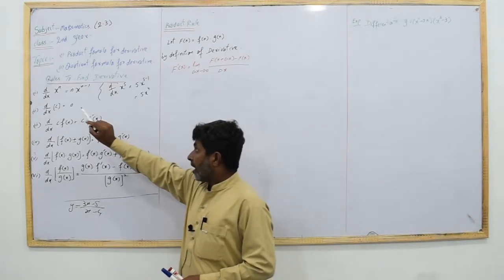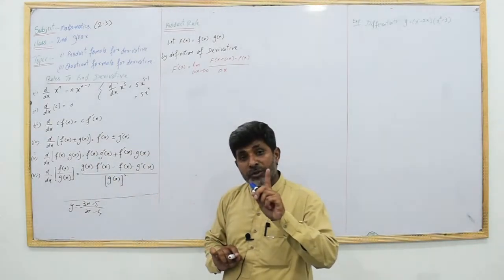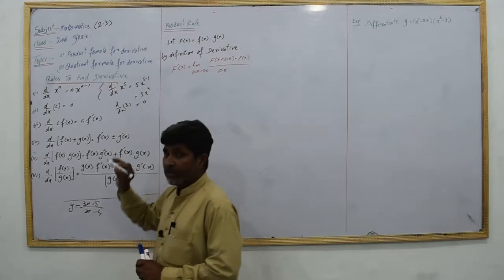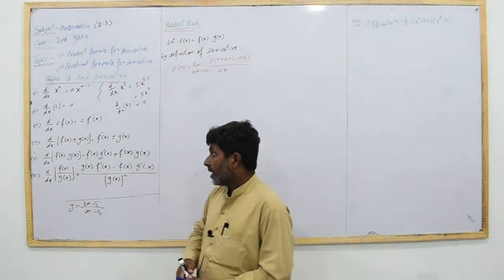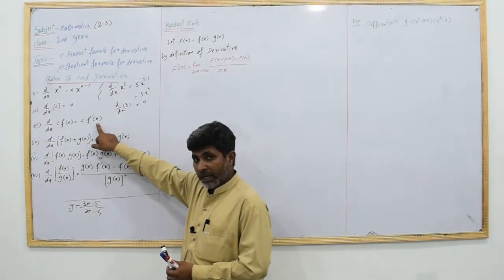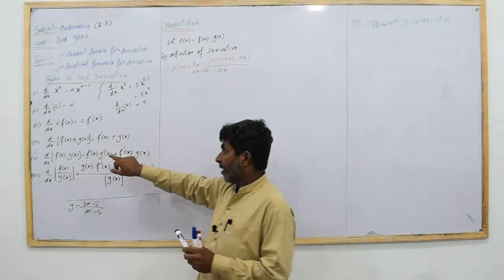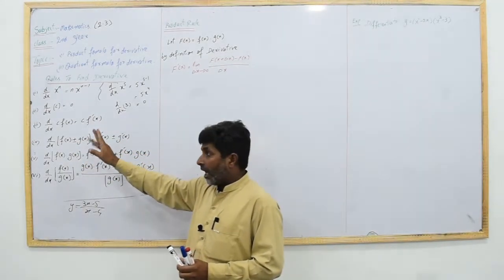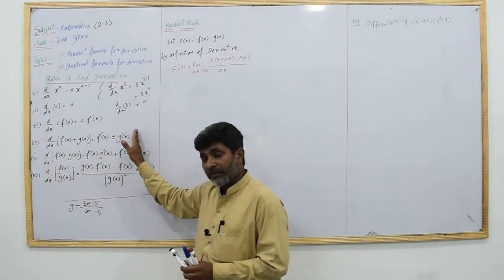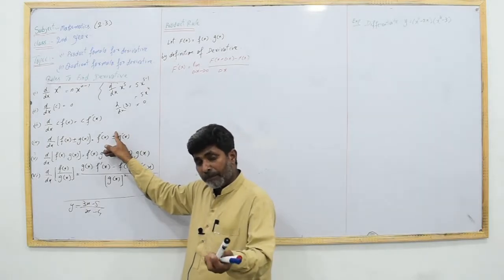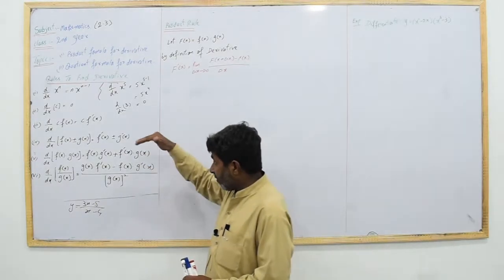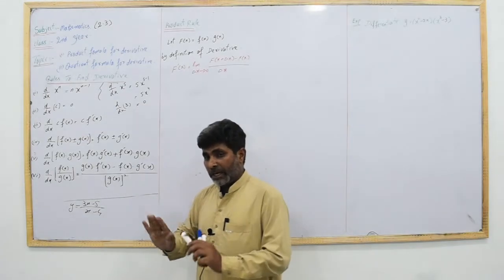Now, the derivative of a constant is equal to 0. Similarly, if a constant is multiplied with a function, we keep the constant and take the derivative of the function. This is the sum and difference rule: if we have two functions added or subtracted, we take the derivative of each separately, keeping the plus or minus sign between them.